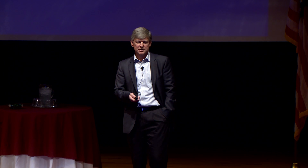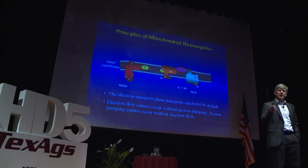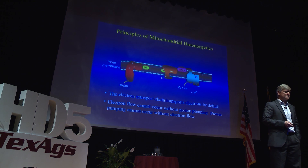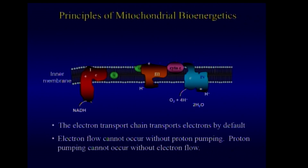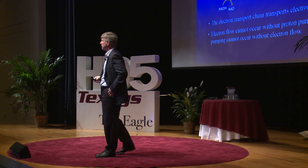Electron flow cannot occur without proton pumping, and proton pumping cannot occur without electron flow. If we were starting from scratch and added fuel — the NADH — electrons start flowing, protons start pumping, oxygen starts being consumed. As protons begin to build up on the outer surface of the membrane, it creates a back pressure on the pumps. Eventually the system reaches the point where the back pressure is so high that it completely opposes further action of the pump. The system at this point is not broken — it's simply reached a static head.